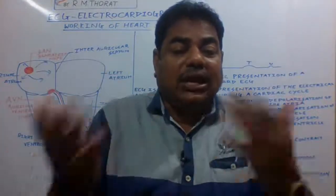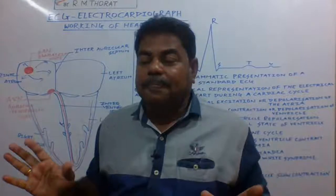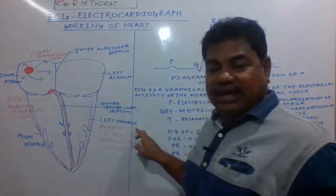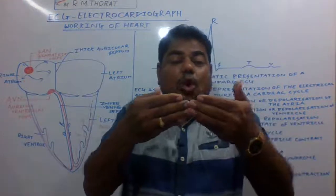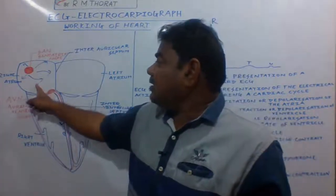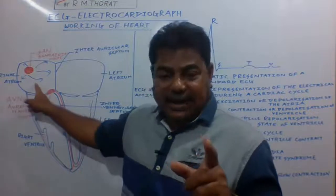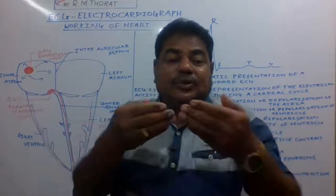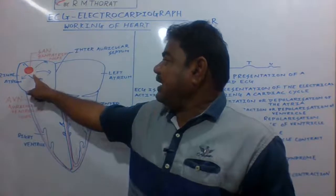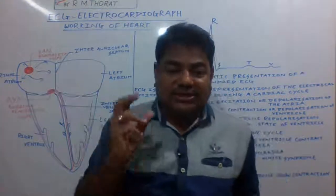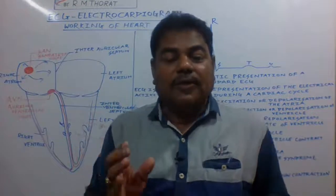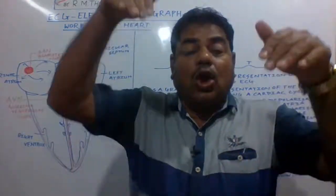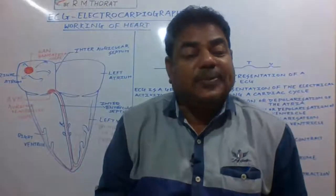When both auricles get full of oxygenated and deoxygenated blood, due to these electrical impulses both auricles contract. We call this auricular systole. When both auricles contract, oxygenated blood from the left atrium is forced into the left ventricle — the bicuspid wall opens. The deoxygenated blood from the right atrium is forced into the right ventricle — the tricuspid wall opens. This contraction of both atria is due to the sinoatrial node.